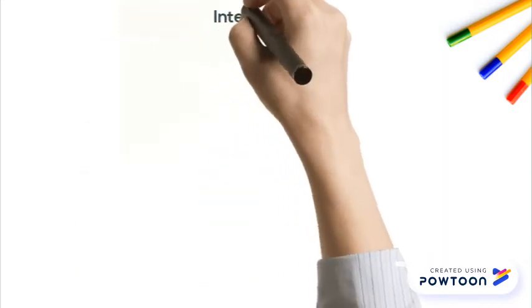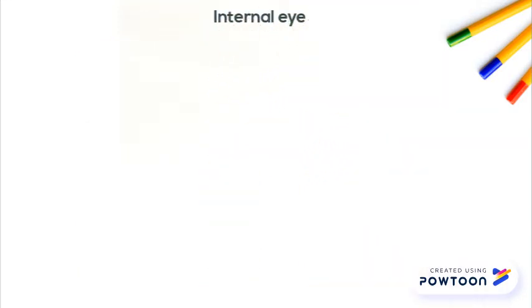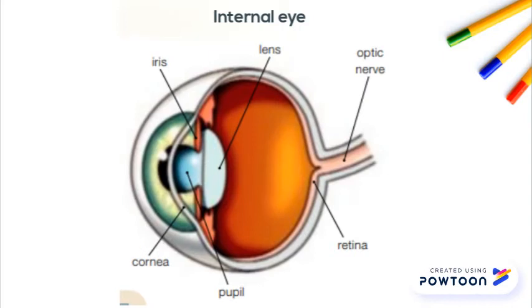And here is a picture of the internal eye where you can see the optic nerve, the lens, the iris, cornea, pupil, and retina.